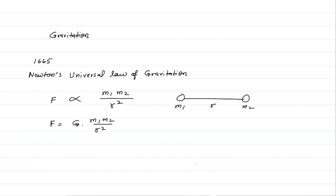G is the universal gravitational constant. The value of G was determined in the laboratory by a scientist named Cavendish, and his method used a torsional balance.